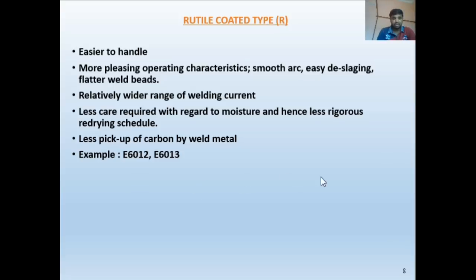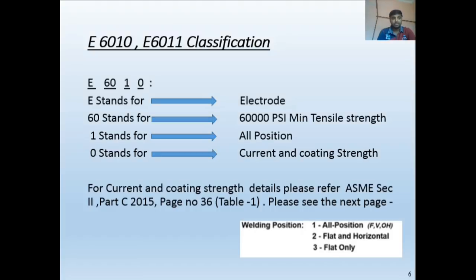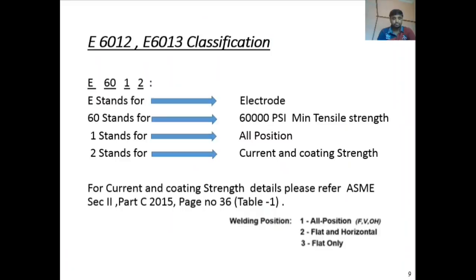E6013 is similar to E6012. For E6012: 'E' = electrode, '60' = 60,000 psi, '1' = all position, '2' = current and coating type; referring to Table 1, '2' indicates high titanium sodium. For E6012 the welding positions include flat, vertical, and the current and coating details are confirmed from Table 1.